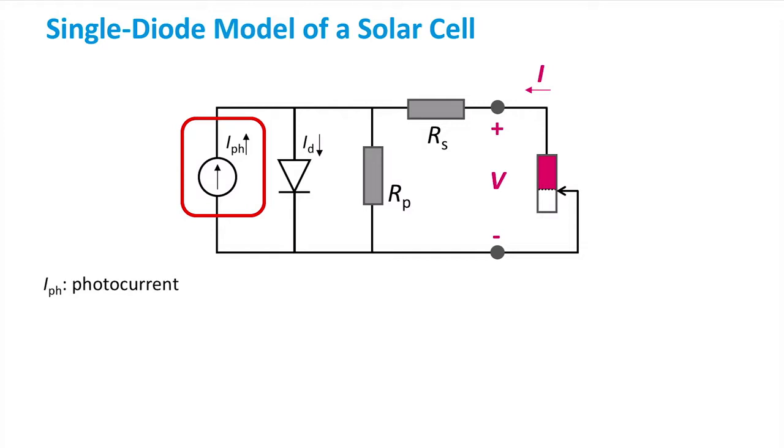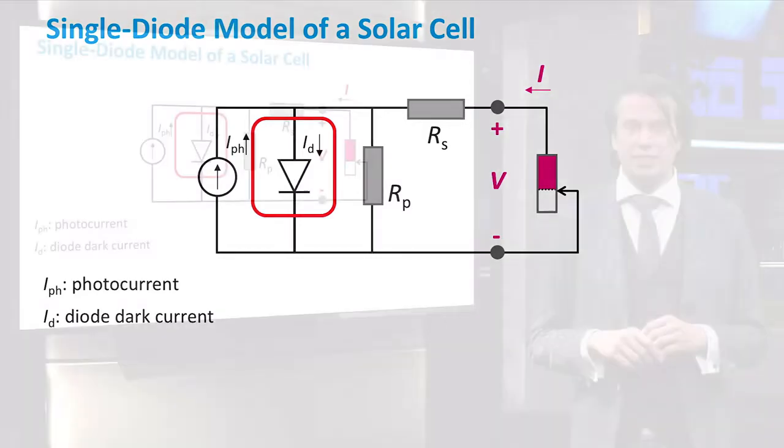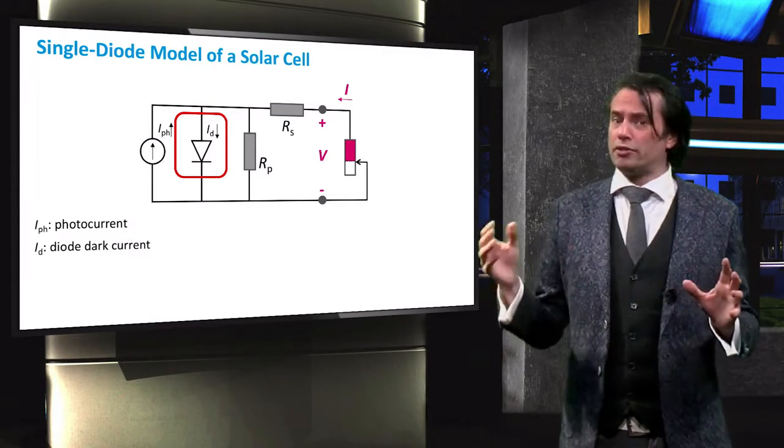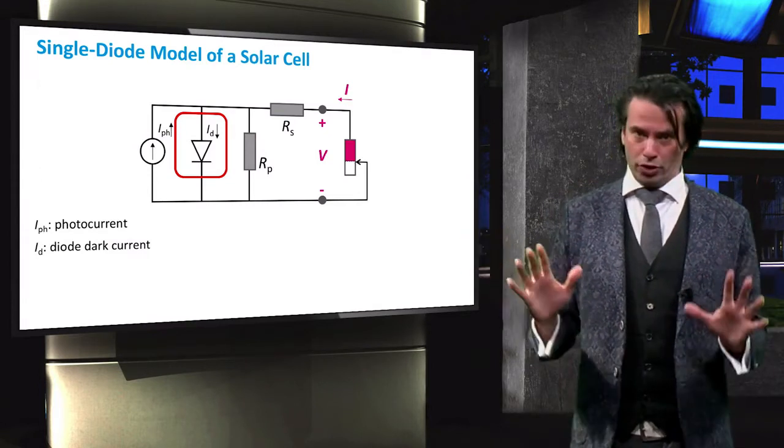Next we see a diode with a current ID passing through it. This represents the solar cell diode characteristics in the dark. You will notice that this current is essentially a sink for the current. Some current will pass through the diode, and this current does not reach the load.